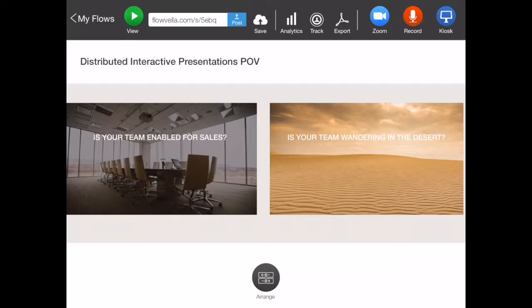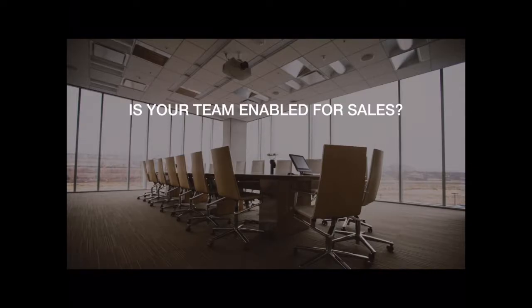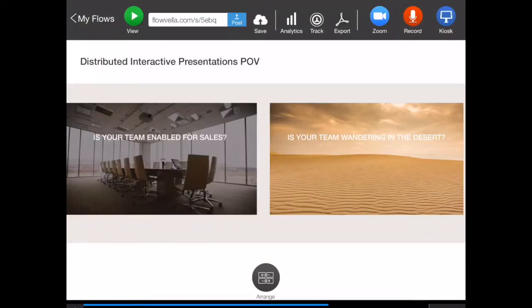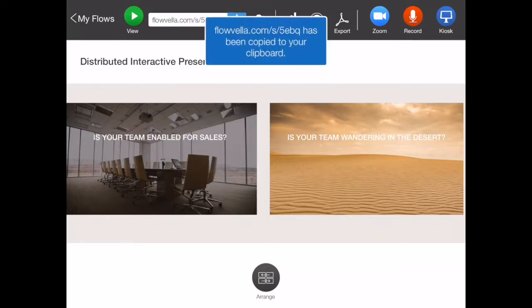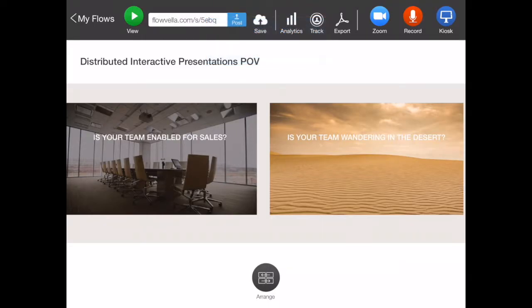Now let's go through all these up top. The view button launches the full screen view of the presentation, and you can slide down to get out of it. Right here shows the URL of the presentation — you can tap that and it gives you the URL that you can then paste into another application. You can post the latest version, or you can save a draft. Saving a draft saves your existing work but doesn't post it. So people viewing your presentation on the web will see the posted version, not the saved version. We also have analytics.